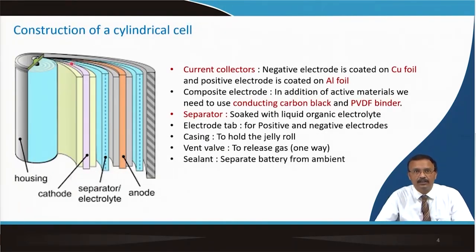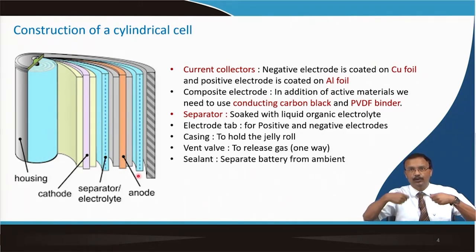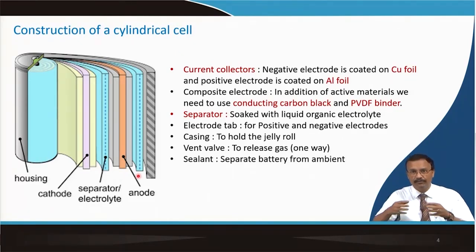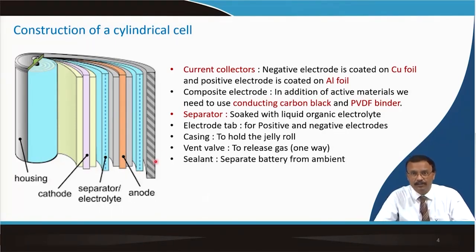Looking at the construction of a cylindrical cell, we have current collectors: the negative electrode is coated on copper foil and the positive electrode is coated on aluminum foil. The cathode material is coated on a current collector, then you have the separator, then the anode, then the current collectors — and everything is rolled. We call this a jelly roll, and the separator is soaked; in fact, the whole assembly is soaked with electrolytes.